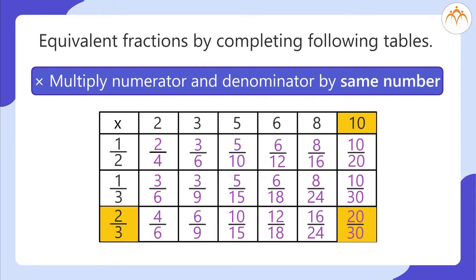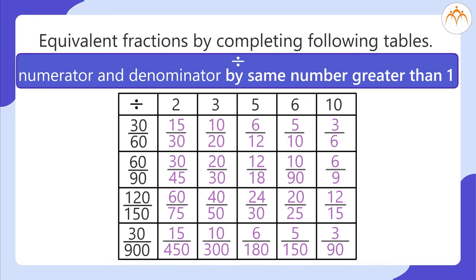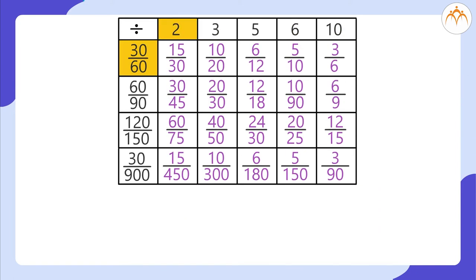We can get equivalent fractions of numbers by dividing numerator and denominator by the same number greater than 1. For example, 30 divided by 60, dividing by 2, gives 15 divided by 30. Dividing by 3 gives 10 divided by 20.